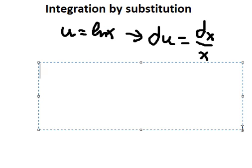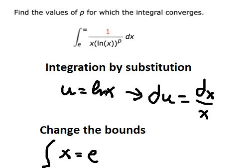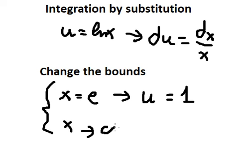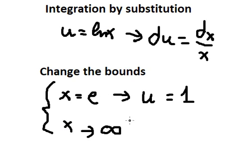We need to change the bounds. When x equals e, we put the value of e in here, so we have u equals 1. When x approaches positive infinity, we put positive infinity in here and we get u equals positive infinity.